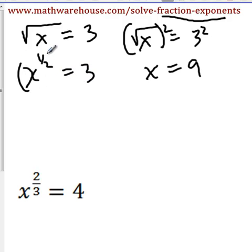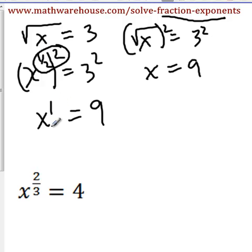And what do we do? We raise both sides to a special number. Turns out it wasn't completely random that you squared both sides. You were raising both sides to the second power because 2 is the reciprocal of 1 half. 2 times 1 half gives you 1.